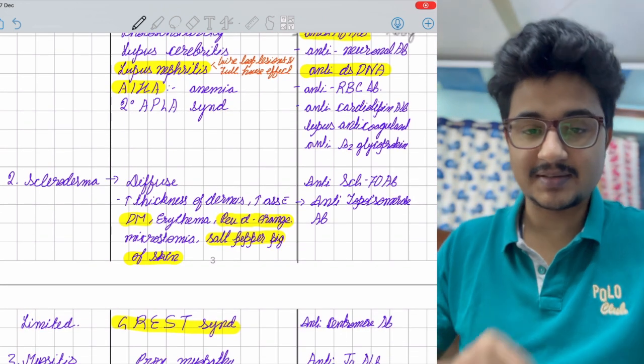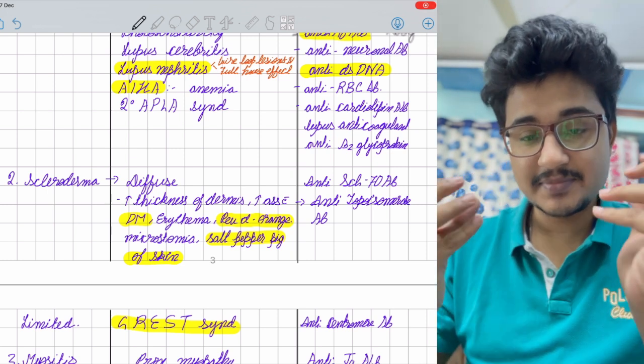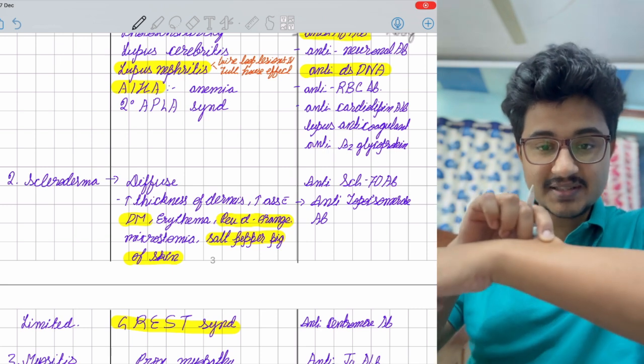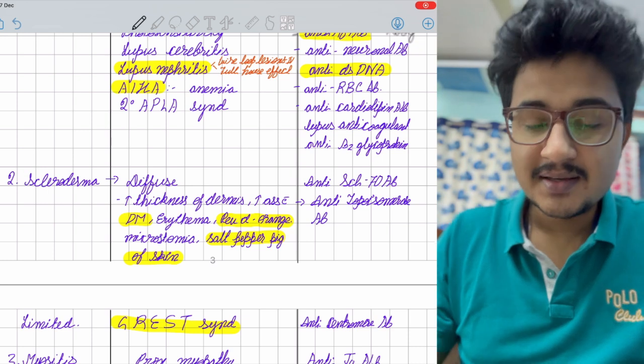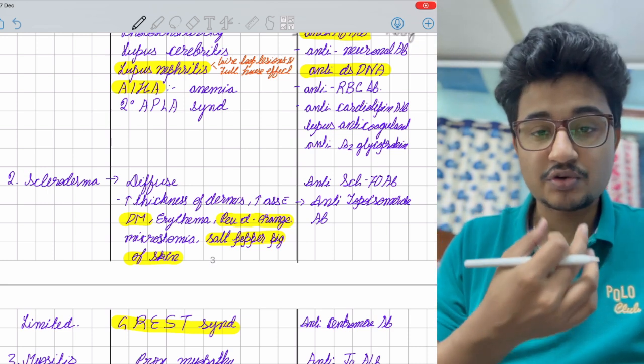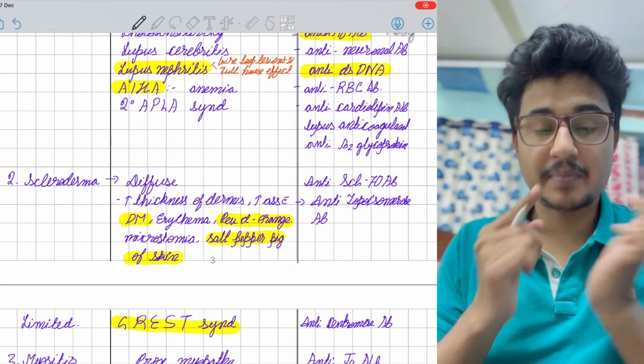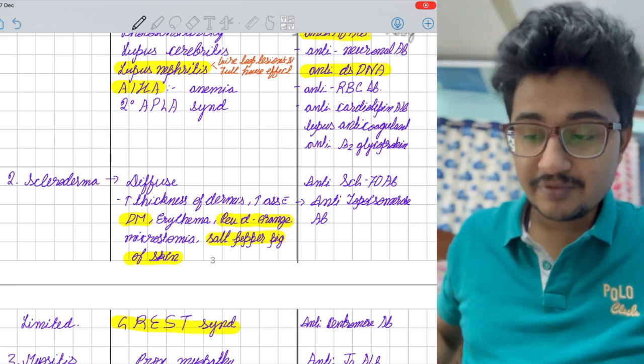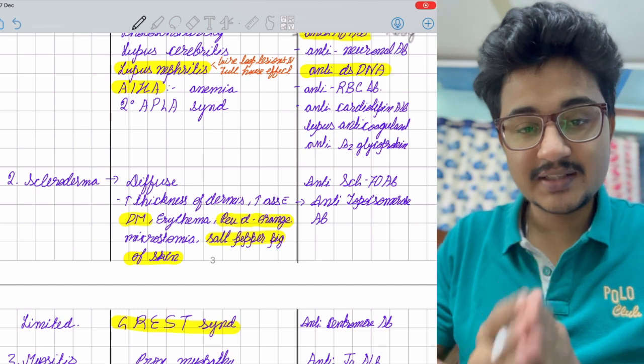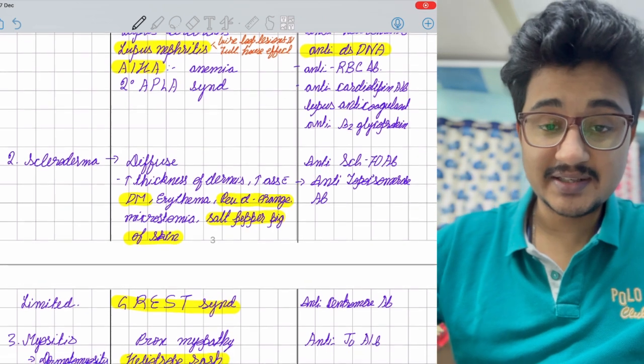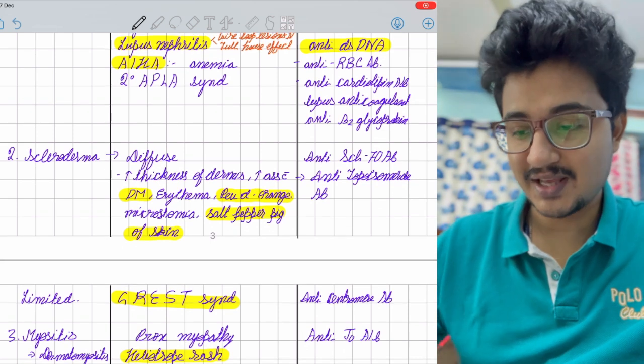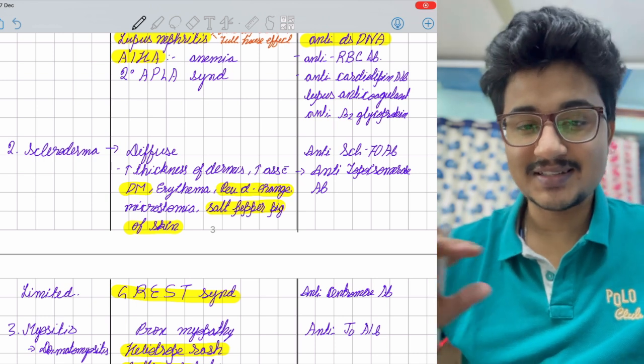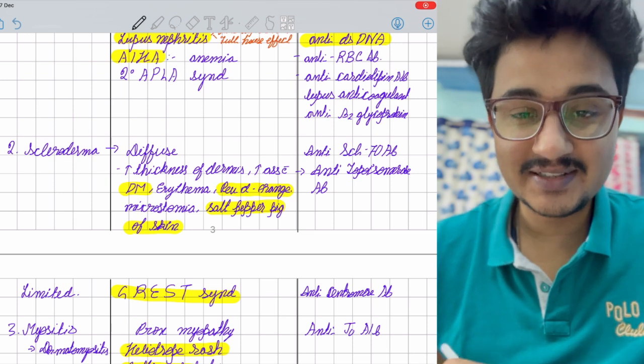Scleroderma means thickening of the skin. The dermis gets thickened, collagen production increases. The skin becomes thick, you can't pinch it easily. In the face, you see microstomia because the mouth can't open properly, and pinched-up nose. It's classified into diffuse and limited types. Diffuse type shows erythema, salt-and-pepper pigmentation which is classically seen.